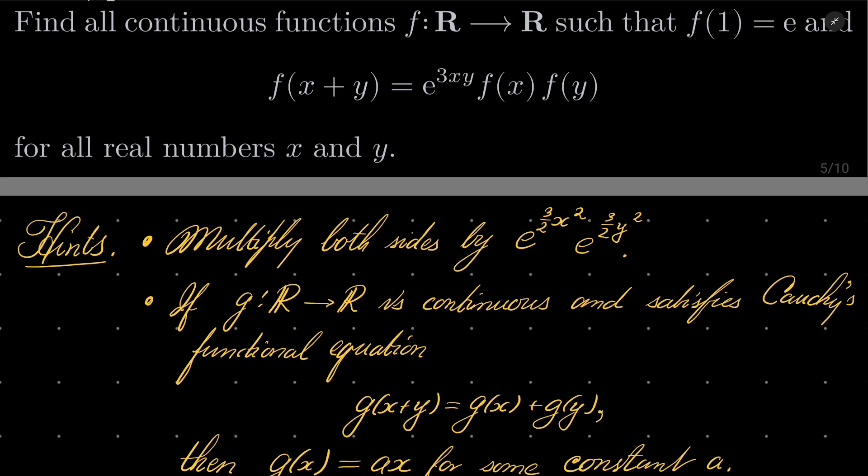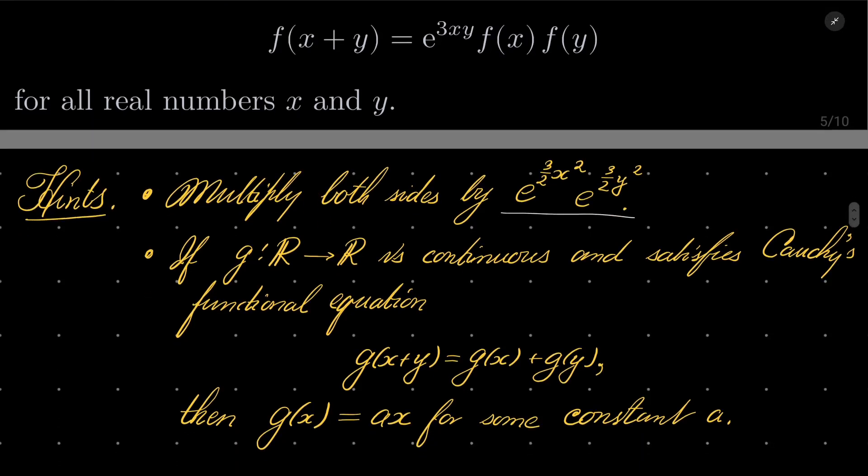Multiply both sides by e to the power 3 over 2x squared and multiply by e to the power 3 over 2y squared. Use the well-known result then, that if g from the set of real numbers into itself is continuous and satisfies Cauchy's functional equation, namely g(x+y) equals g(x) plus g(y), then g must be linear.